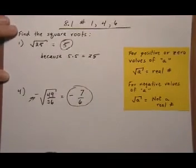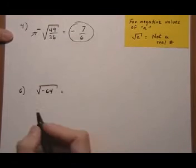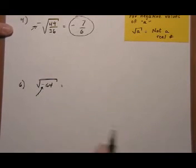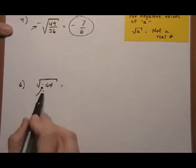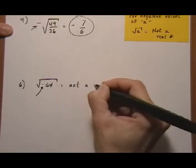And if we look down at the bottom here, number 6. Now we have the negative sign on the inside, which is very important. That changes everything completely. This would be not a real number.